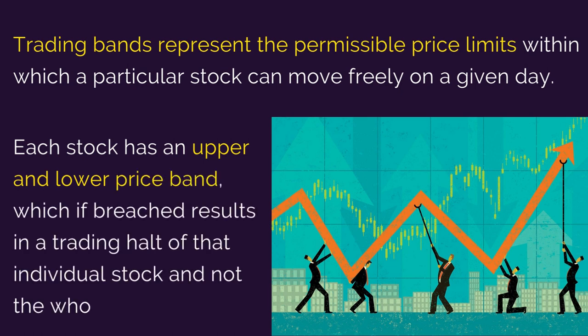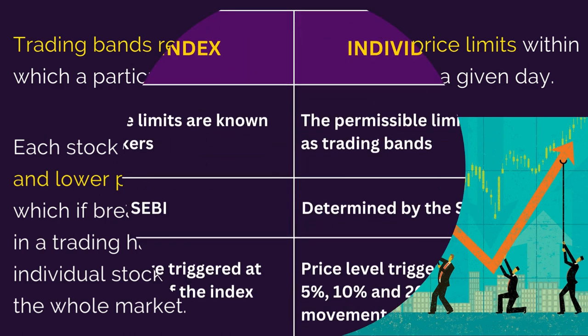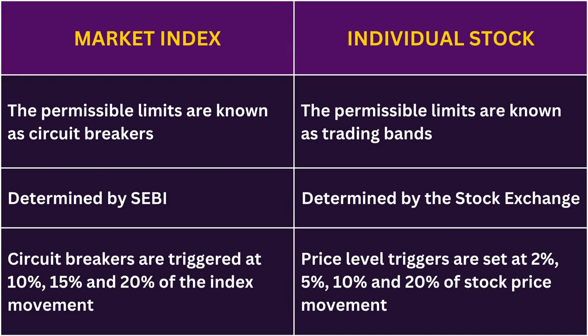The difference between circuit breakers and trading bands is that the former is applicable to the market index and its trigger levels are decided by SEBI, whereas the latter is applicable to individual stocks and is determined by the stock exchange.